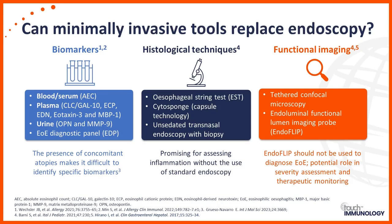Three minimally invasive techniques have been looked at to assess esophageal inflammation. The esophageal string test involves a capsule patients swallow containing a string; it sits in the esophagus for an hour, is then removed, and sent to the lab for an eosinophilic score. The second is a cytosponge, also housed in a capsule, which is swallowed, removed from the esophagus, and sent for similar assessment. The third is unsedated transnasal endoscopy, placed through the nose and down the esophagus, which can visualise the esophagus and take biopsies. These are promising for assessing inflammation without standard endoscopy, and recent publications have looked at these tools following dietary therapy.